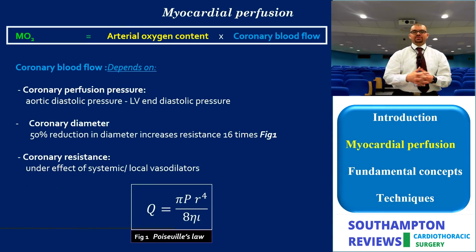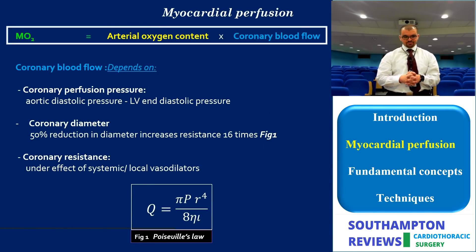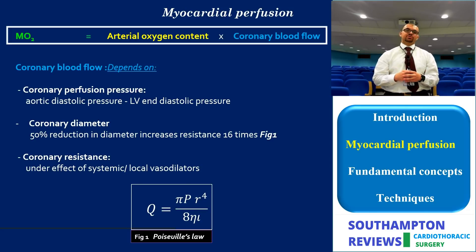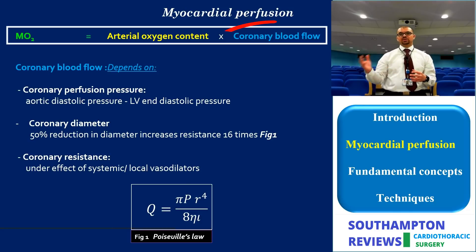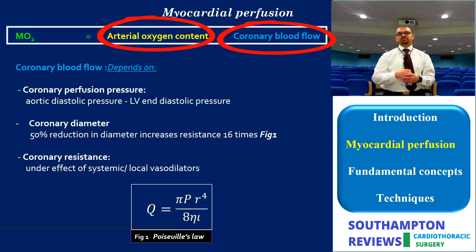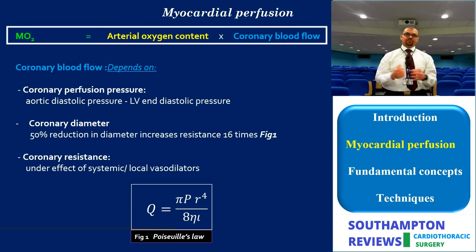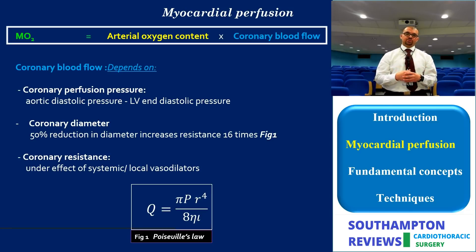To start with the first discipline: myocardial perfusion. In this discipline, we will be looking at the various factors which contribute to myocardial oxygen supply. Myocardial oxygen supply is governed by two main arms — how much blood is reaching the heart, and how much oxygen is available in that blood. In technical terms, MO2 (myocardial oxygen content) equals arterial oxygen content times myocardial perfusion or coronary blood flow.